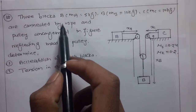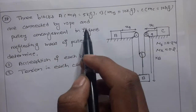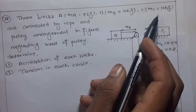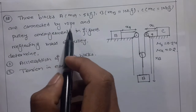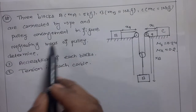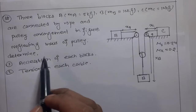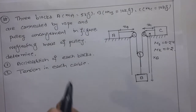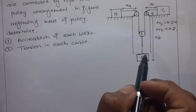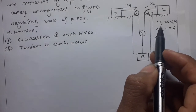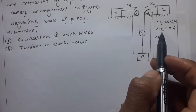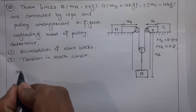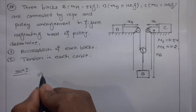The question is: three blocks — mass A is 5 kg, mass B is 10 kg, and mass C is 10 kg — are connected by a rope and pulley arrangement. Neglecting the mass of the pulley, determine the acceleration of each block and the tension in each cable. Given: μs = 0.24 and μk = 0.2.